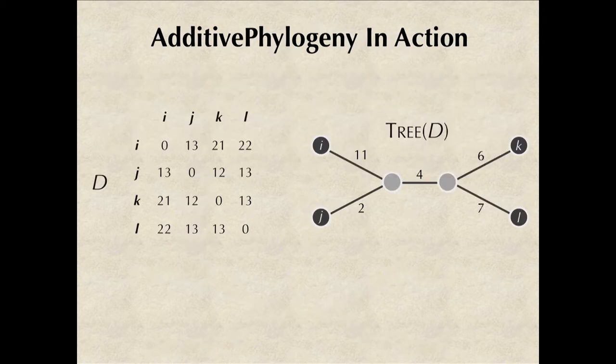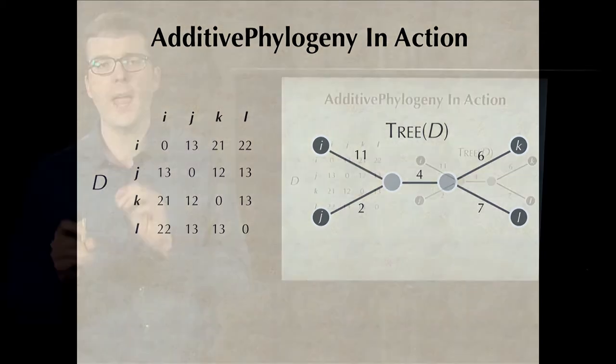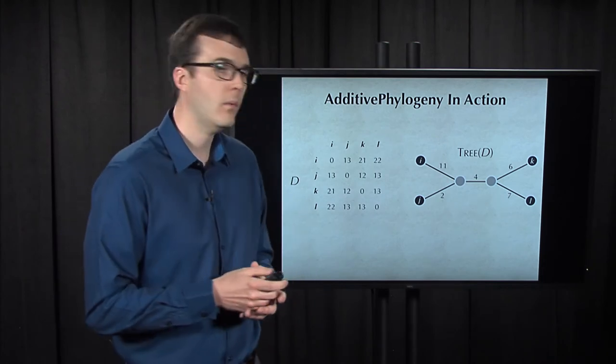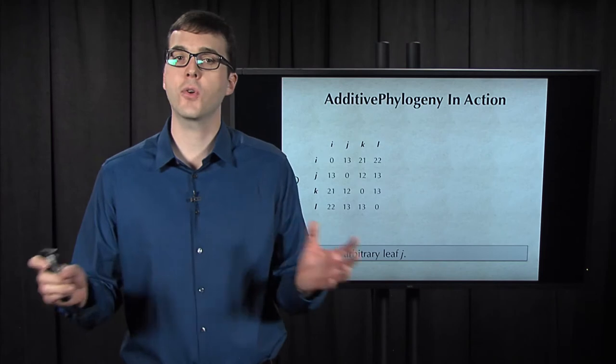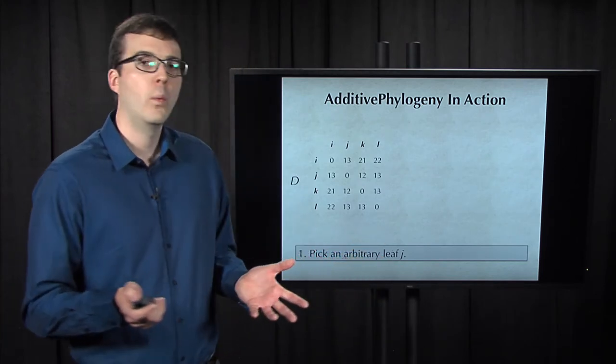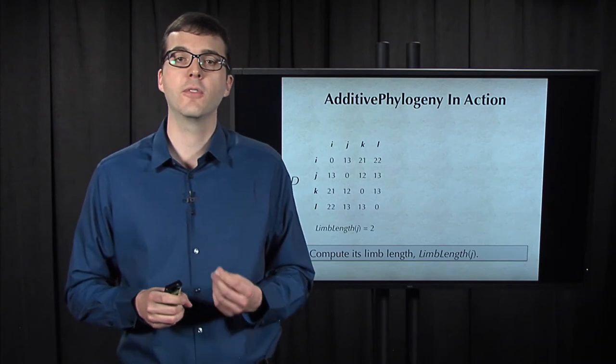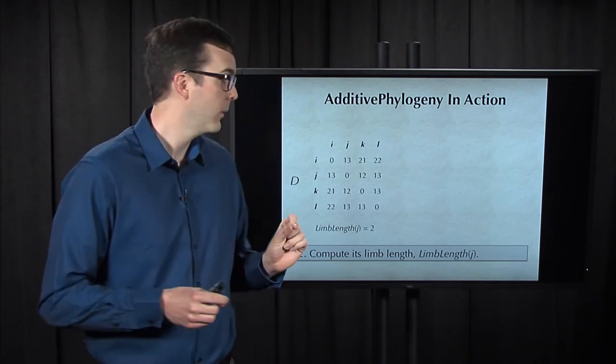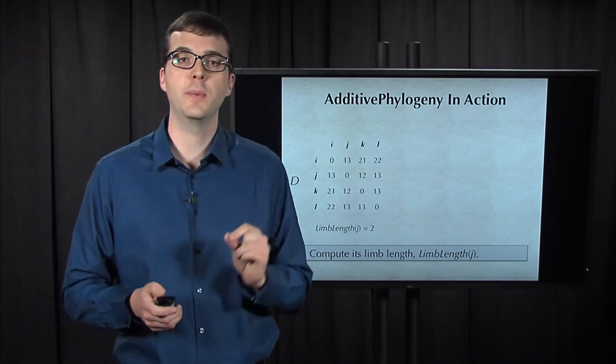Now we're ready to introduce a recursive algorithm called additive phylogeny that operates by computing limb length. So let me show you the outline of how this algorithm works on the additive matrix that we encountered at the end of the last section and that I tripped you up on. We begin by selecting an arbitrary leaf, say J. We can then apply the limb length theorem to find that the length of this limb, which in this case is going to be equal to 2.